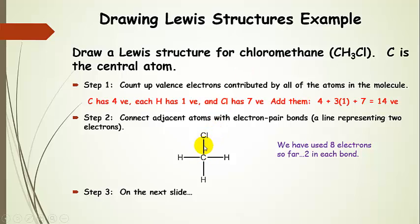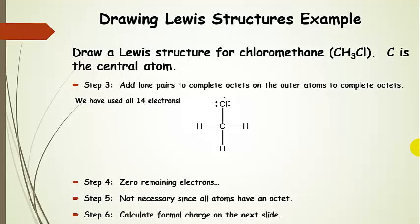We're going to connect these adjacent atoms with bonds — each one of these bonds is two electrons. Connecting those atoms together, we've now used eight electrons: two, four, six, eight electrons used. So now we still have valence electrons left. Let's go ahead and complete the octet on the outer chlorine atom.